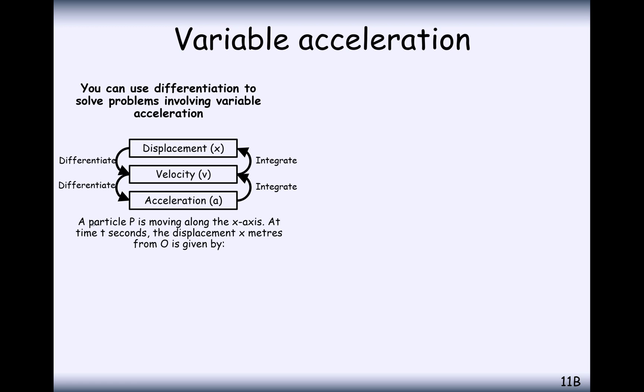Alright then, so let's have a go at a question here. If particle P is moving along the x-axis at time t seconds, the displacement x is given by this formula here. The questions are: find the speed of P when t equals 3 and find the value of t for which P is instantaneously at rest. So this here is our displacement formula and if we want to find the speed of P when t equals 3, then we differentiate to find velocity.